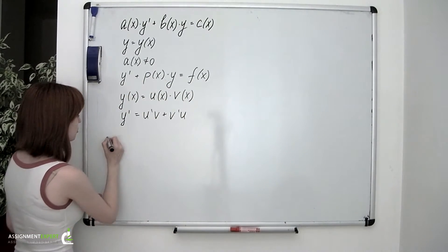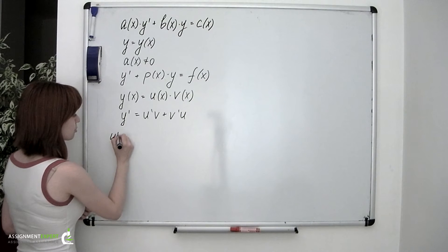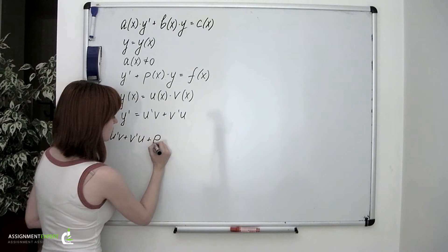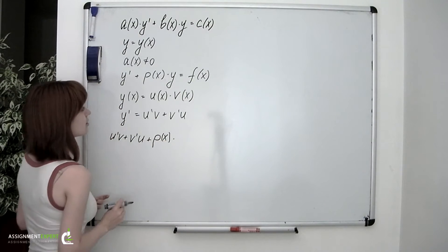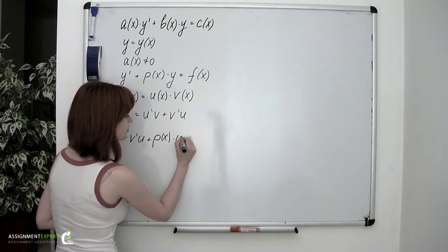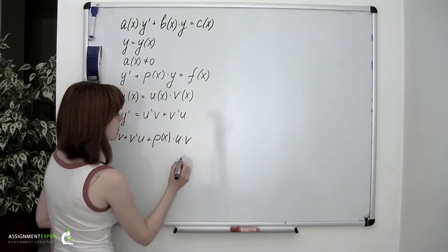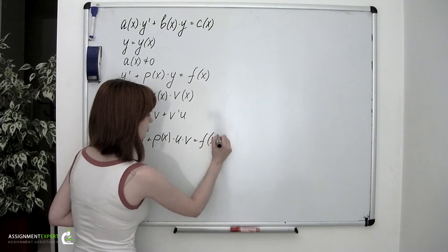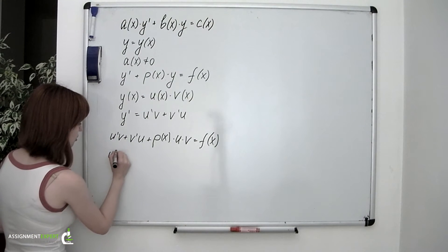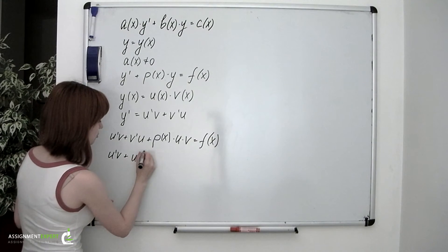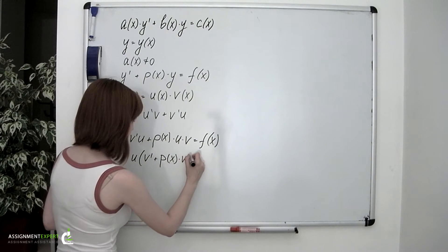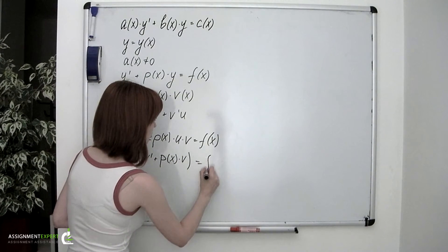Now let's substitute these two expressions into our equation. So instead of y' we write U'V plus V'U, and then we have plus P(x) times y, and since y equals U times V, we get P(x) times U times V equals F(x). We can factor out U, and so we have U'V plus U times (V' plus P(x)·V) equals F(x).